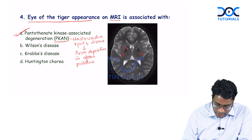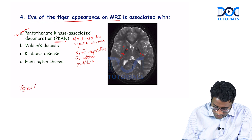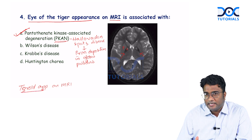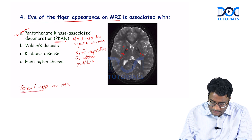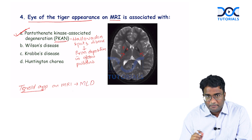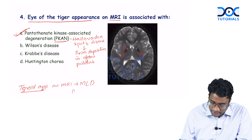Do not confuse with tigroid appearance on MRI. Tigroid appearance, also called leopard skin or lamellated appearance on MRI, is seen in the white matter and is suggestive of metachromatic leukodystrophy.